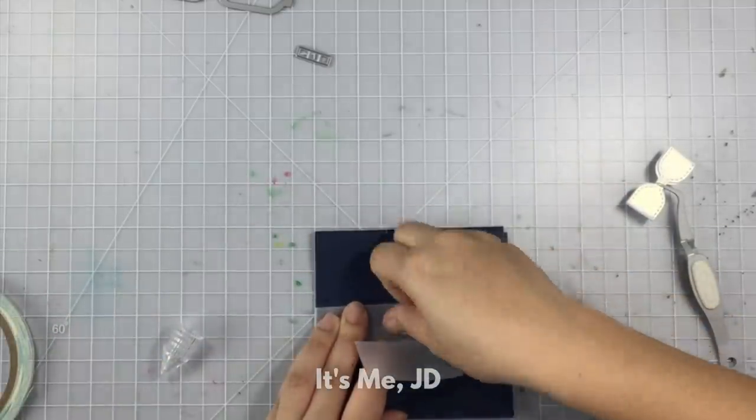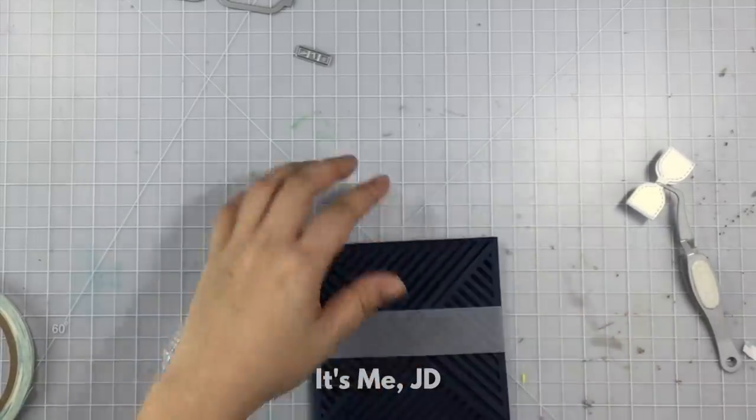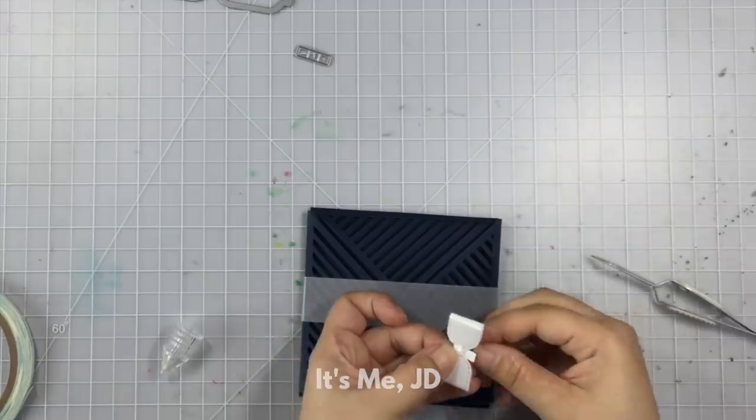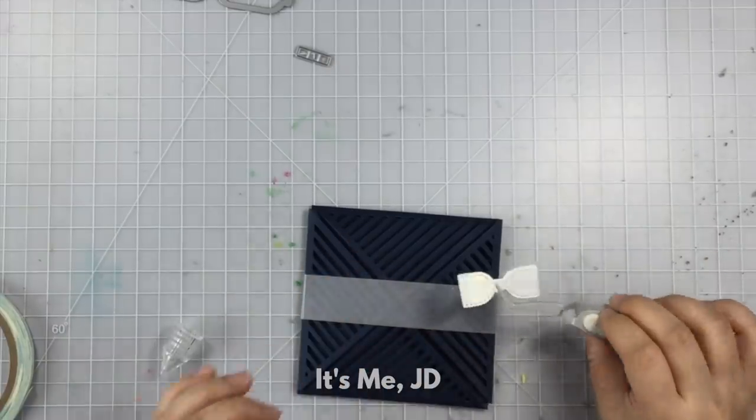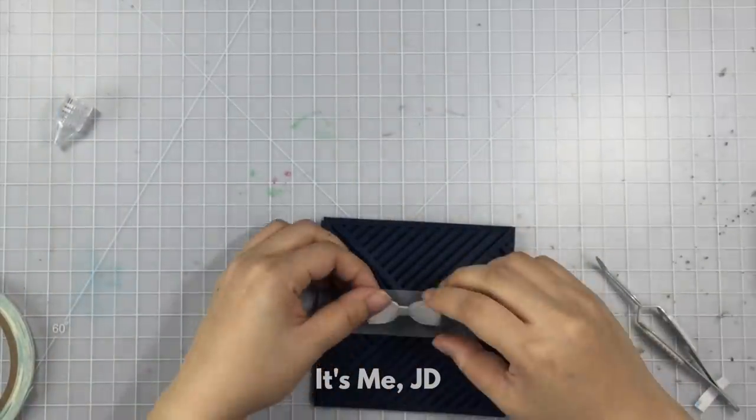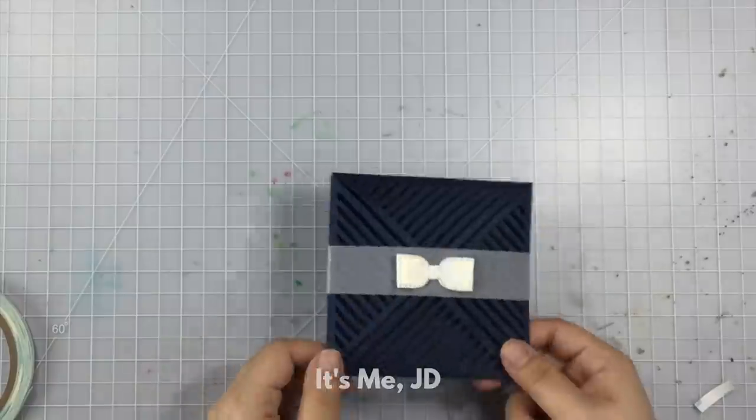And now the disadvantage to a paper ribbon belly band versus a fabric ribbon belly band is that it's going to get a little smooshed if you mail it. So just keep that in mind. This technique might be better or might keep its shape more if it's a hand delivered card like in a gift bag or a wedding card or something.